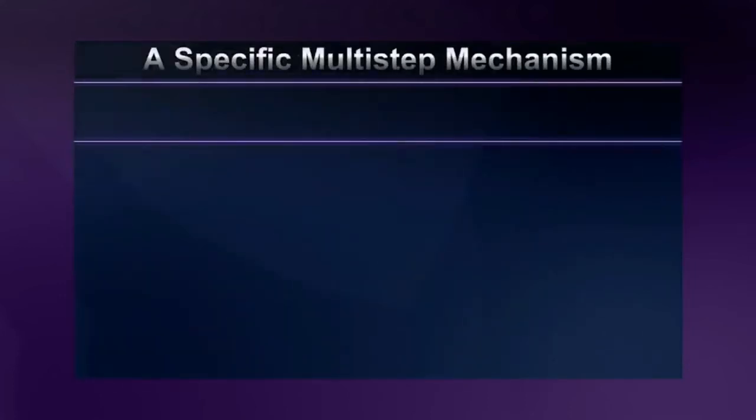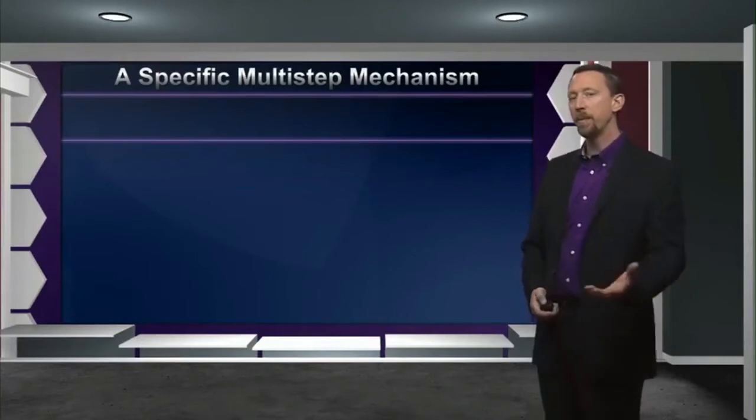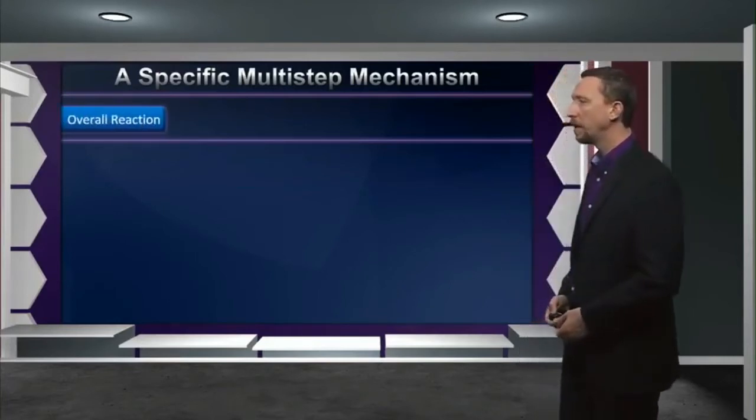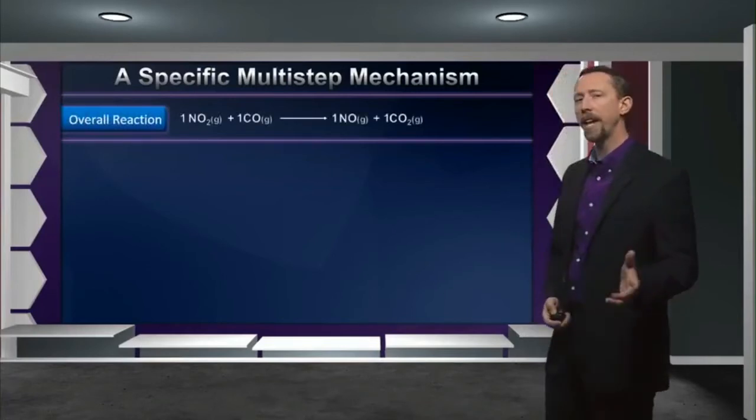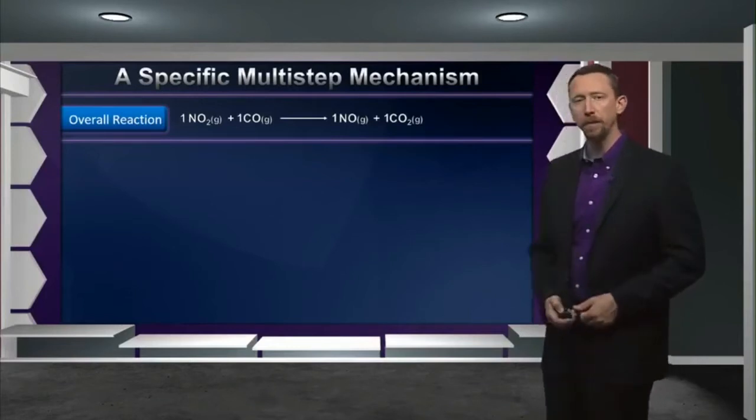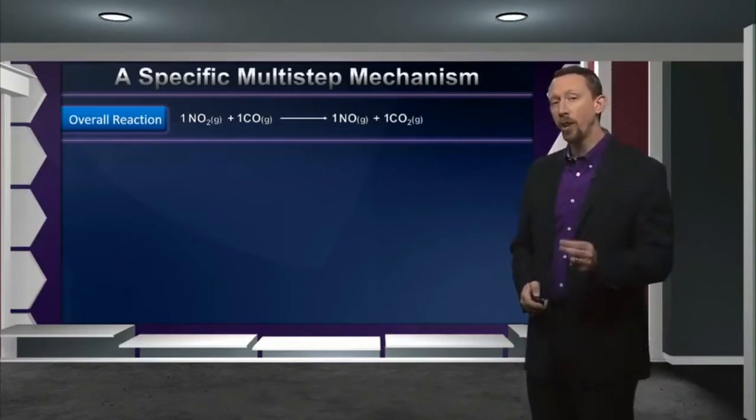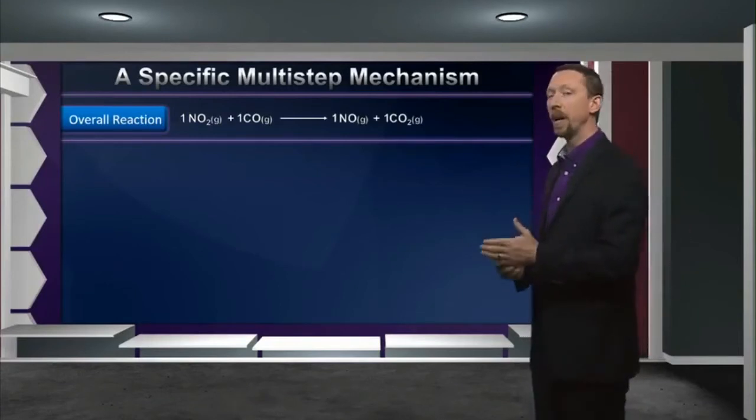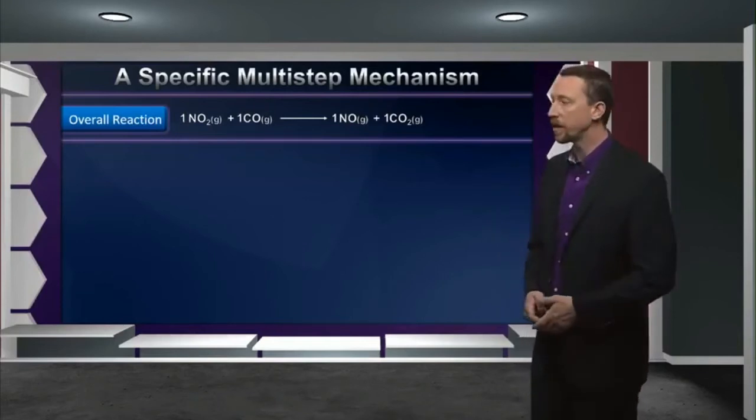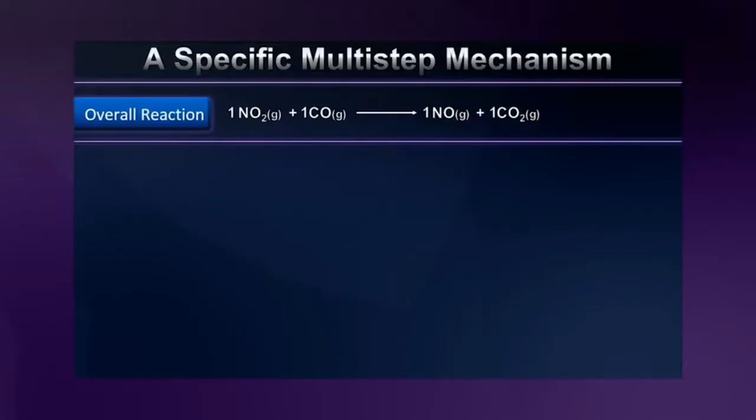Now that we have mastered modeling generic mechanisms and how they would change rate laws, let's think a little bit more about a specific mechanism. Let's look at this reaction. The reaction between NO2 and CO to form NO and CO2. Now, let's say that we go into the laboratory and we actually determine the rate law for this chemical reaction by running it under various conditions of concentration and measuring its initial rates, just as we did in our previous lecture. And that, after all that work, we determine that the rate law for this reaction is K times the concentration of NO2 squared.